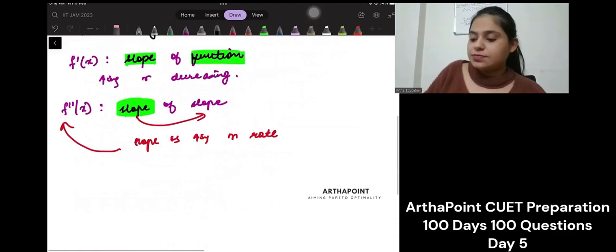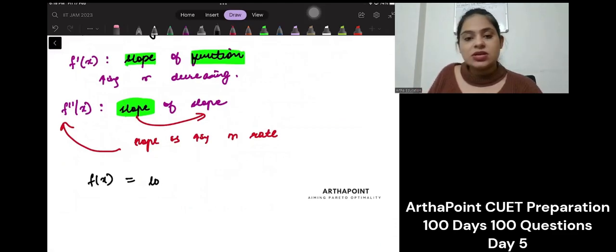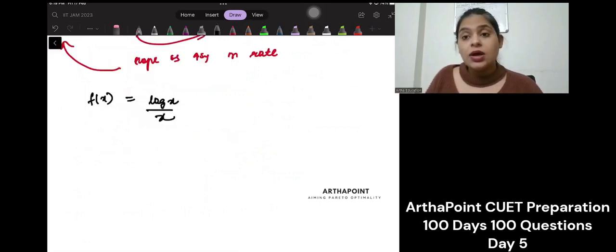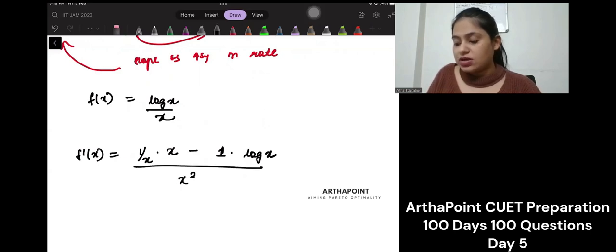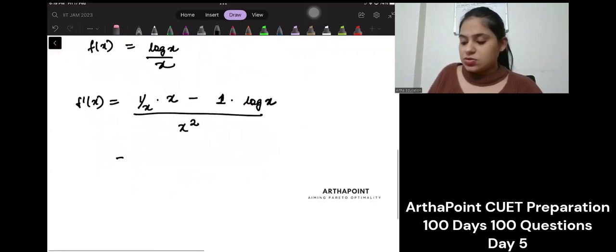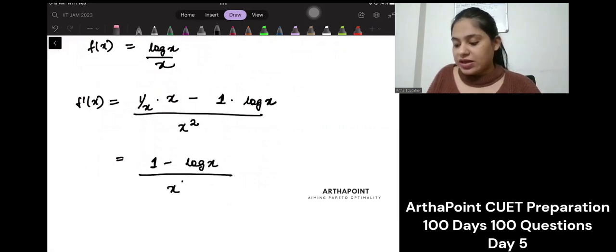So, you're given that f(x) is log x by x, right? Log x by x. So, we need to find out f'(x). So, we will use the rule of quotient rule. So, f'(x) would be differentiation of the numerator, denominator as it is, minus differentiation of denominator, numerator as it is, upon denominator whole square. This is going to be (1 - log x) upon x square.